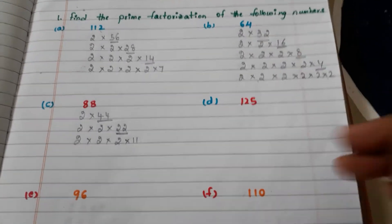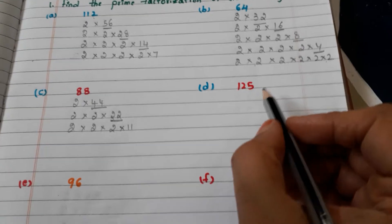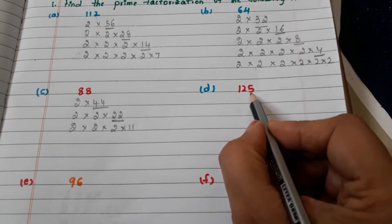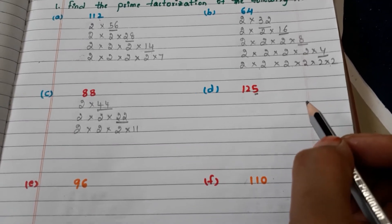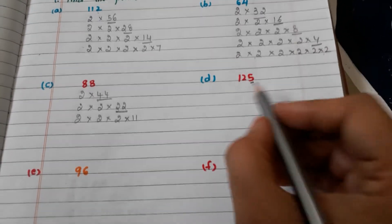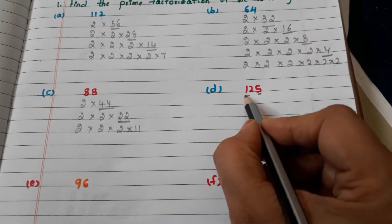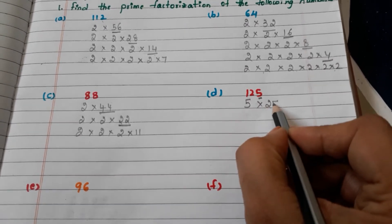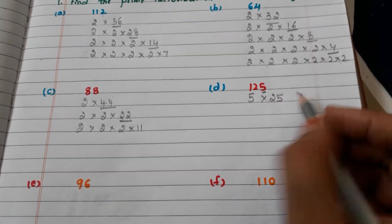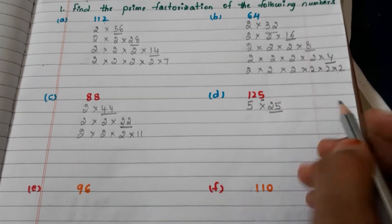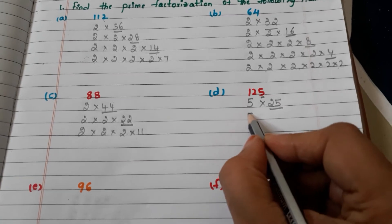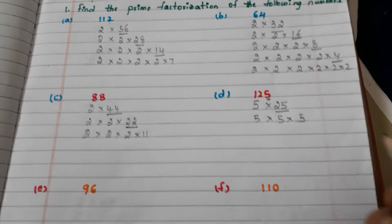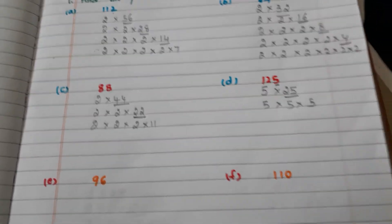Next number is 125. How we can write it? In the units place, 5 is there, so it goes with 5. So 5 into 25. Now 25, how we can write? 5 into 5 into 5.